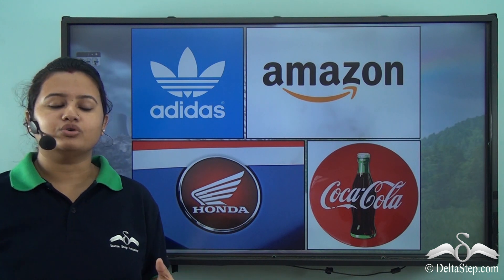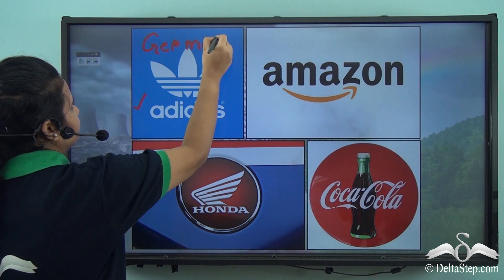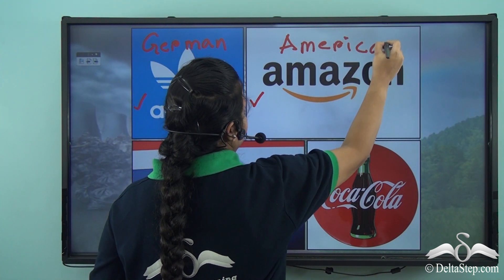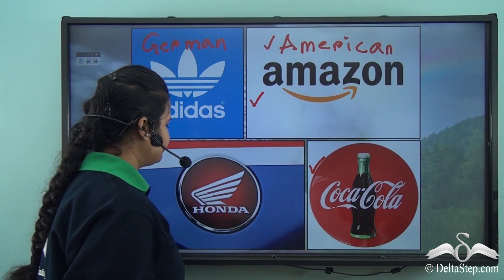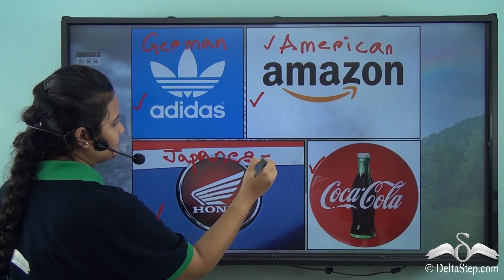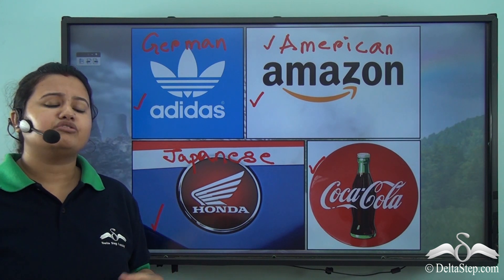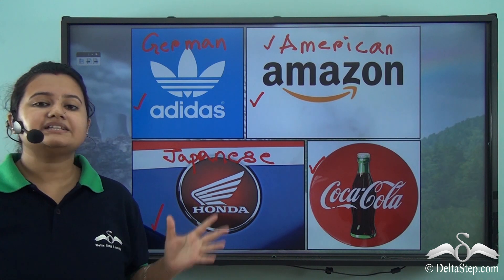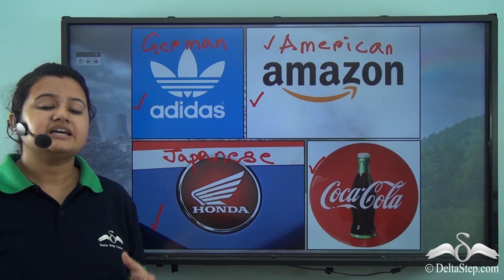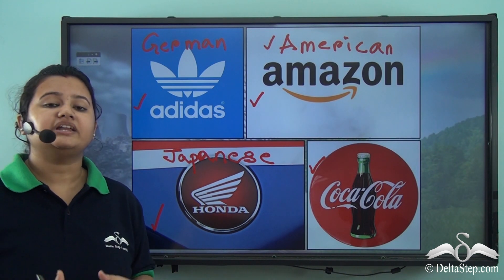Here we have logos of different brands. Adidas is a German brand, Amazon is an American brand, Coca-Cola is also an American brand, and Honda is a Japanese brand. These brands exist globally — that is, people from all over the world can buy the products of these brands. So with the availability of these goods, information and technological knowledge all over the world, we can see that the countries of the world are interconnected, and there is a free flow of goods, information and technology between different nations.